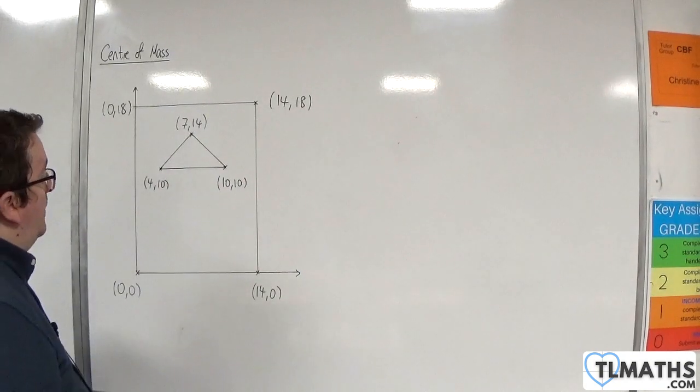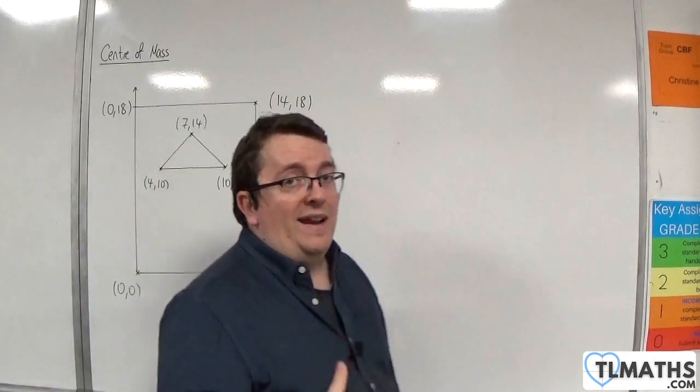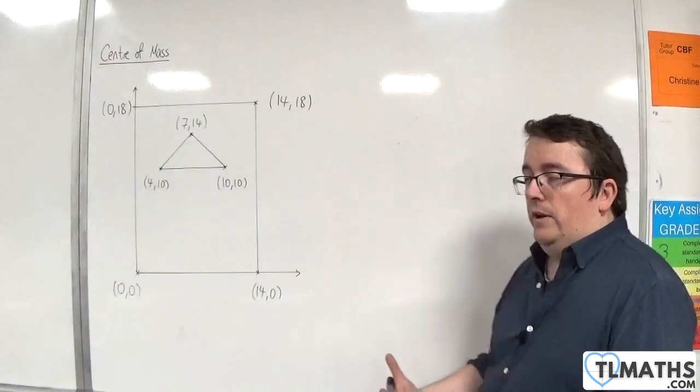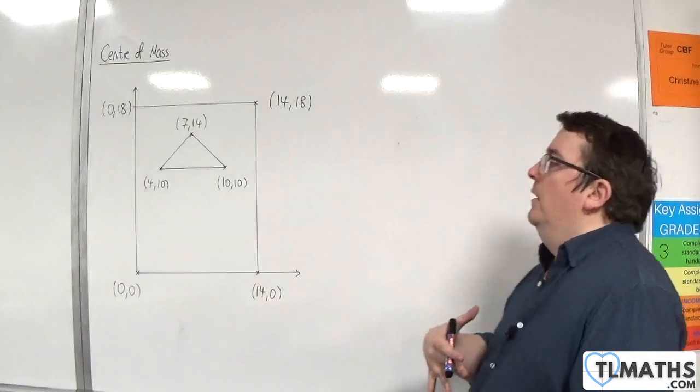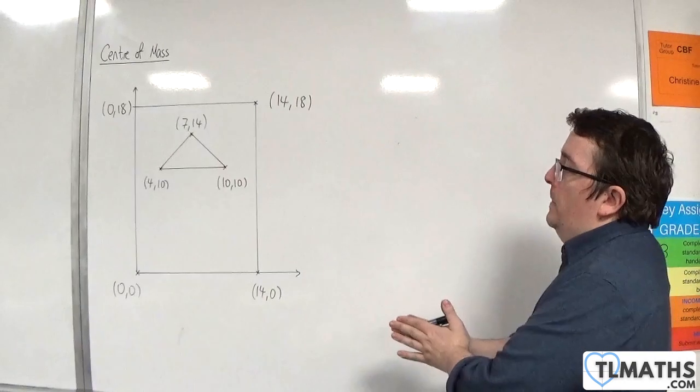That's telling me that x equals 7 is a line of symmetry for the whole shape, so the centre of mass must have an x-coordinate of 7. I could just focus on the y-coordinates here. I'm not going to, but we know what the answer for the x-coordinate's got to be.